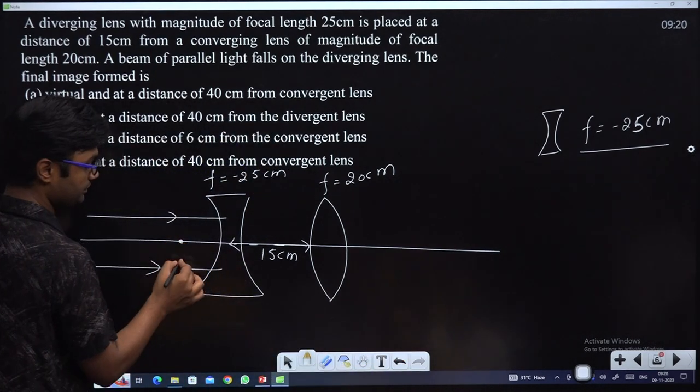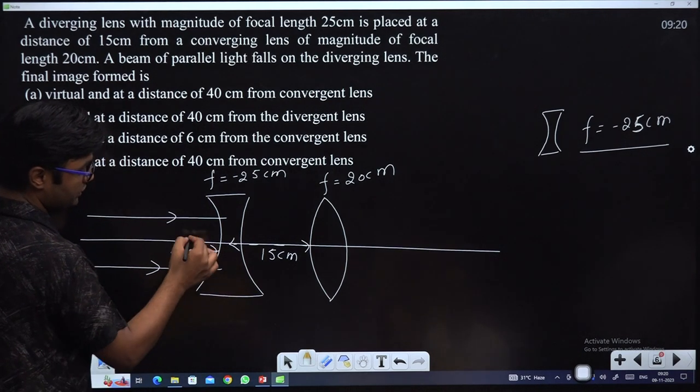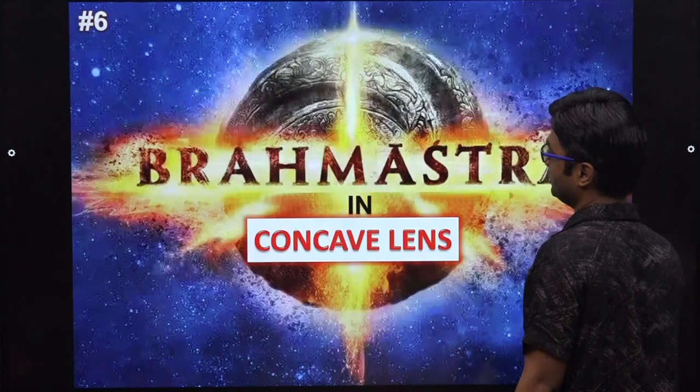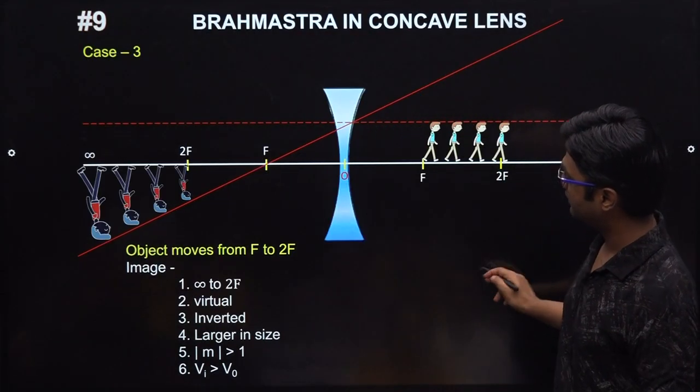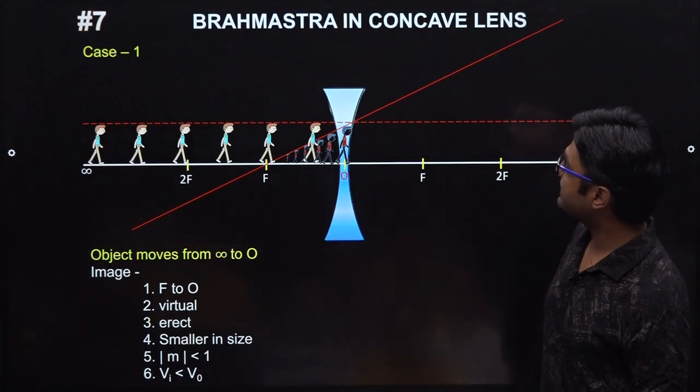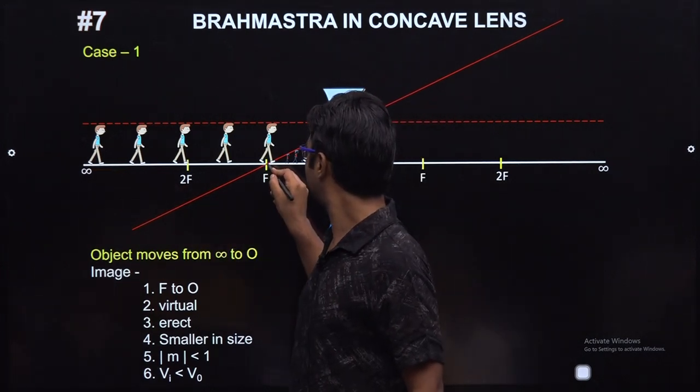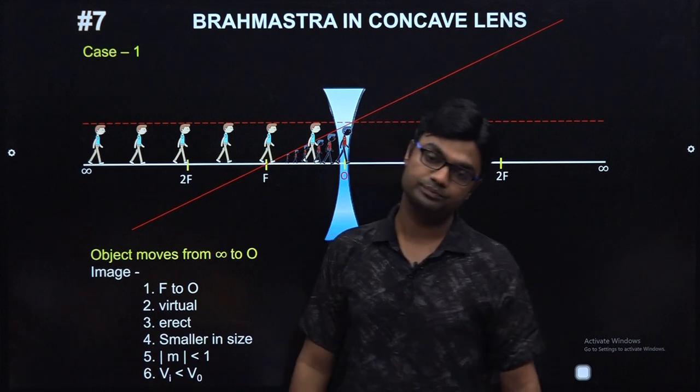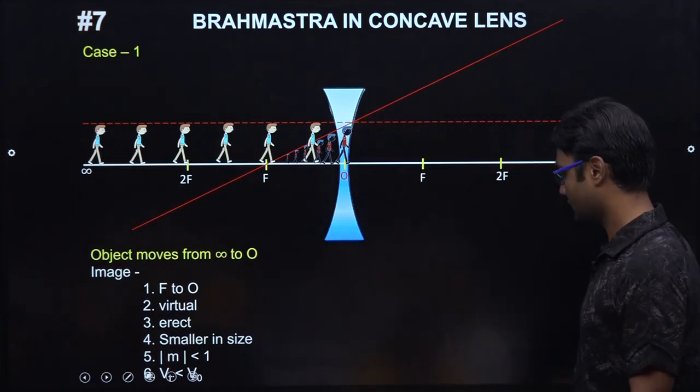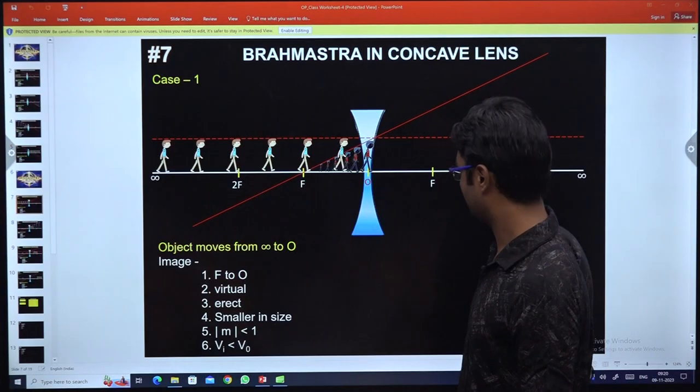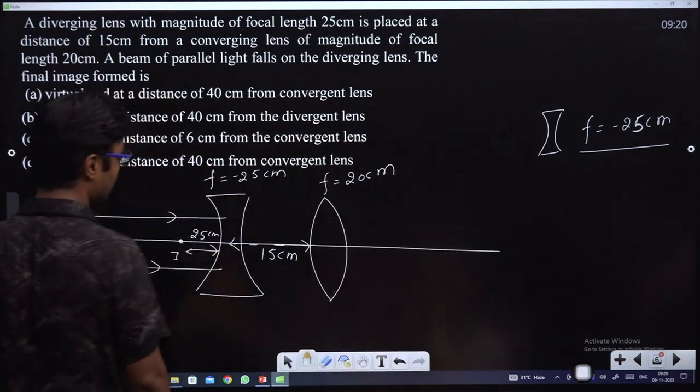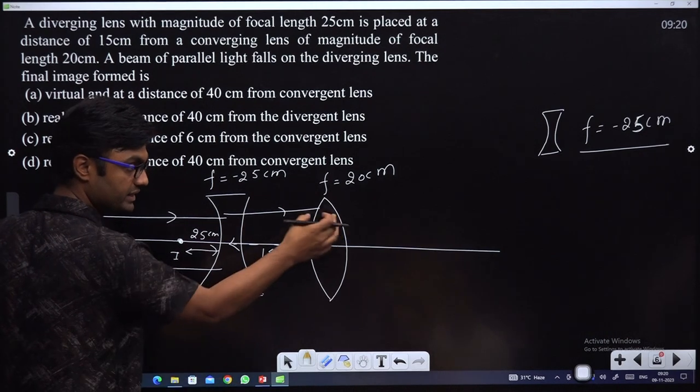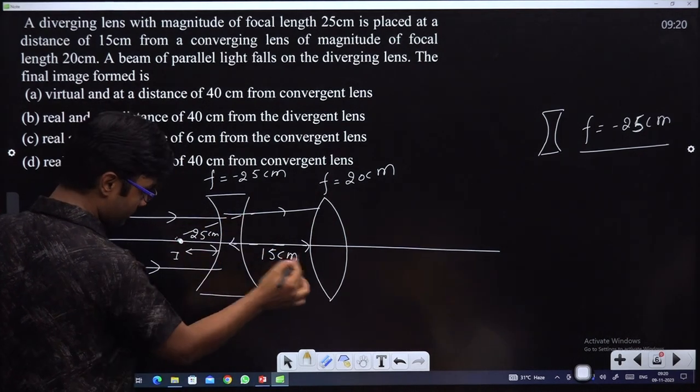The image will be formed. This distance is 25cm. For a concave lens with object at infinity, the image forms at the focus. The image is here on the right side.